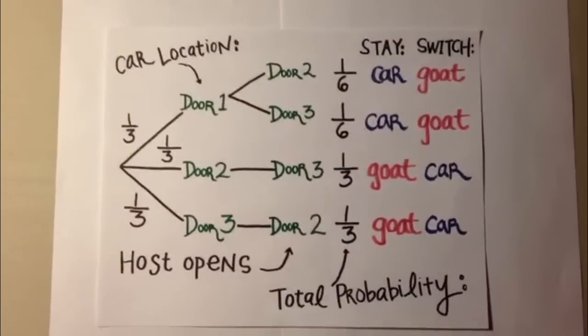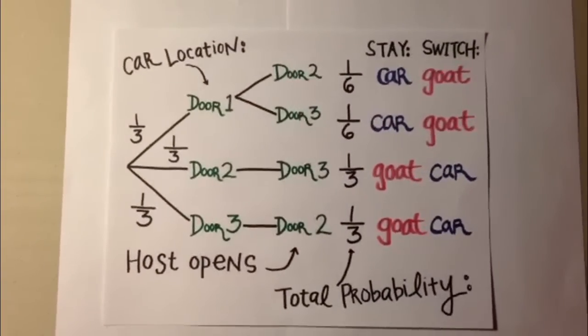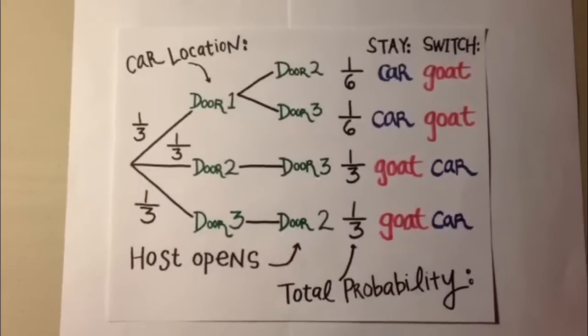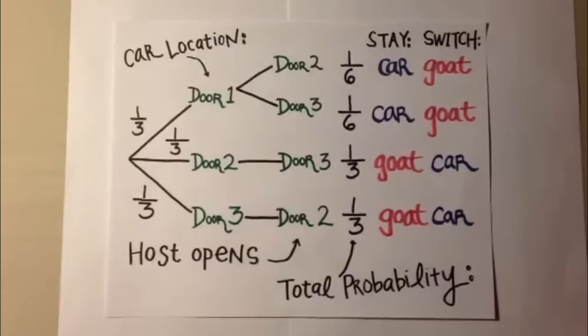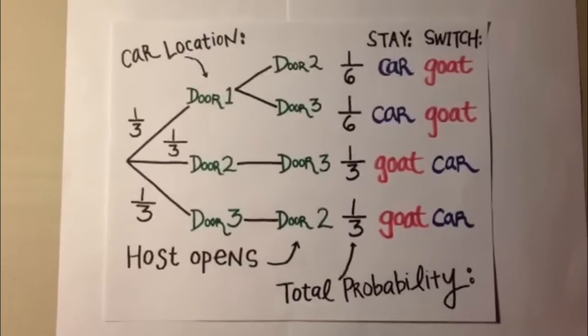The following tree diagram shows three possible arrangements. One of a car and two goats behind three doors. The probability of winning by staying with the initial choice is therefore one-third. While the probability of winning by switching is two-thirds.